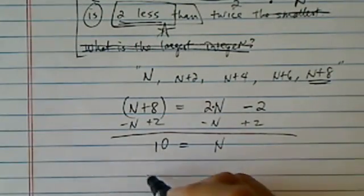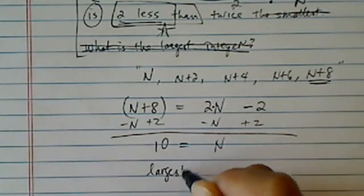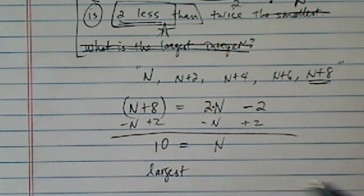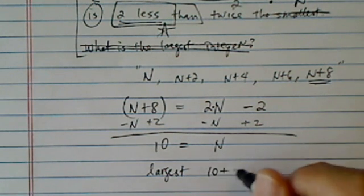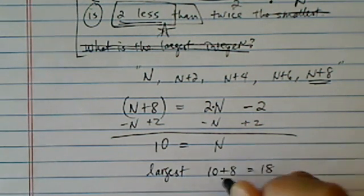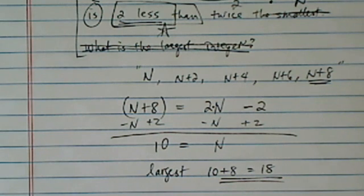If n equals 10, then the largest integer or consecutive one is 10 plus 8, which is 18. So largest integer is 18.